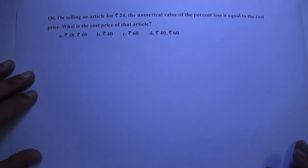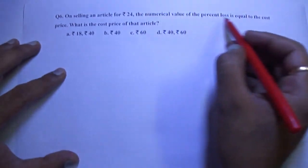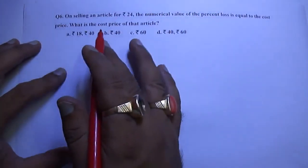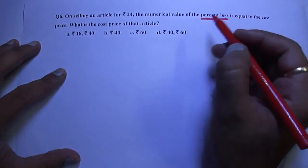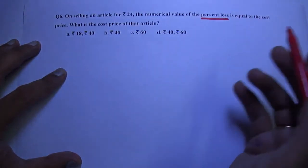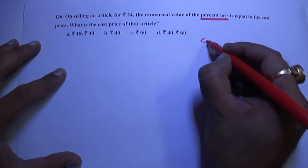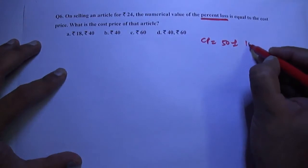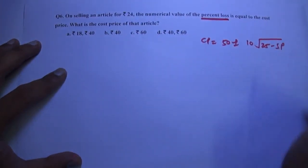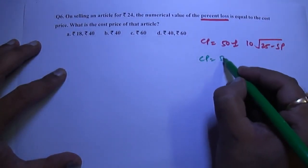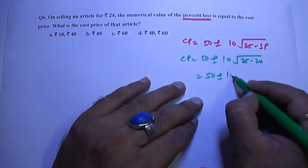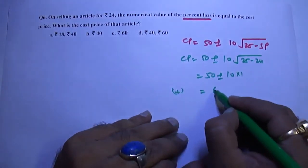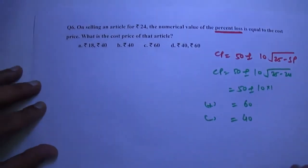Question on loss. On selling an article for Rs.24, the numerical value of the percentage loss is equal to the cost price. Same question, but in previous question we have profit. In this case we have loss. In case of percentage loss, there are always 2 CP. Now, in this case, the formula is CP is given by 50 plus minus 10 times square root of 25 minus SP. 10 times 1. Taking positive sign, we get 60. Taking negative sign, we get 40. So our answer is D.